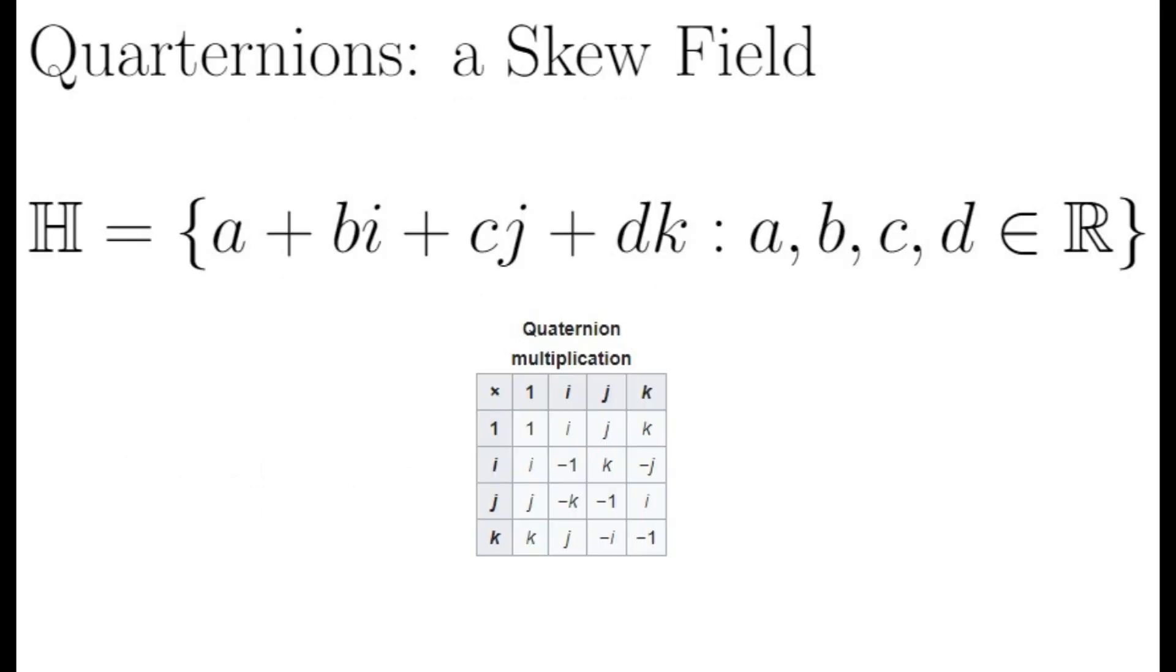The quaternions however, which I will denote H for Hamilton, do not form a field. They form a skew field since multiplication is not commutative. Quaternions are numbers of the form a plus bi plus cj plus dk, where a, b, c, and d are real, and multiplication of i, j, and k are defined by the following table. You can see the multiplication in H is not commutative since, for example, i times j is k but j times i is negative k. The quaternions are a four-dimensional extension of the real numbers that have many applications in areas like computer programming and physics.